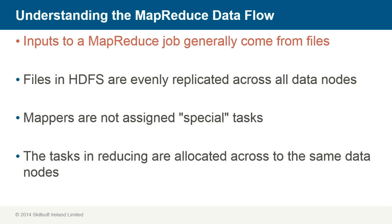The inputs to a MapReduce job generally come from files that have been uploaded on the HDFS from our Hadoop cluster. Files in the HDFS are evenly replicated across all data nodes. When running a MapReduce job, it may involve running mapping tasks on many of the data nodes in the Hadoop cluster. Each mapping task running in the tracker of each data node is identical. They are not assigned special tasks.